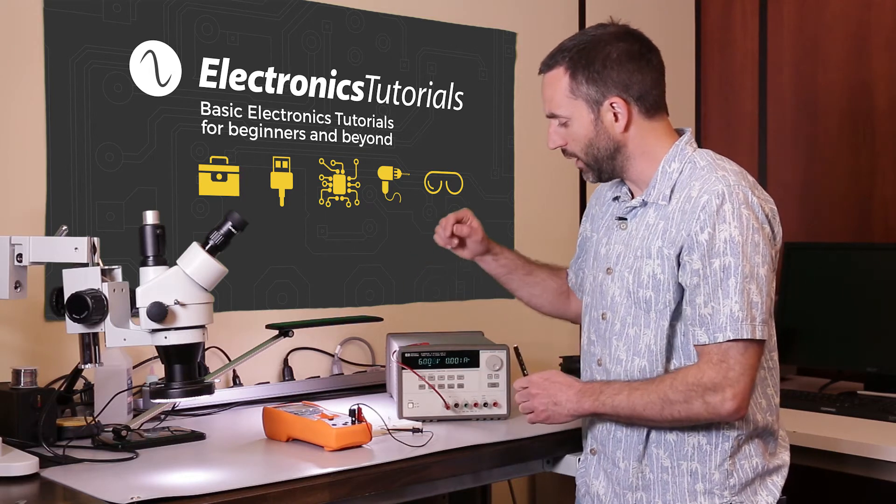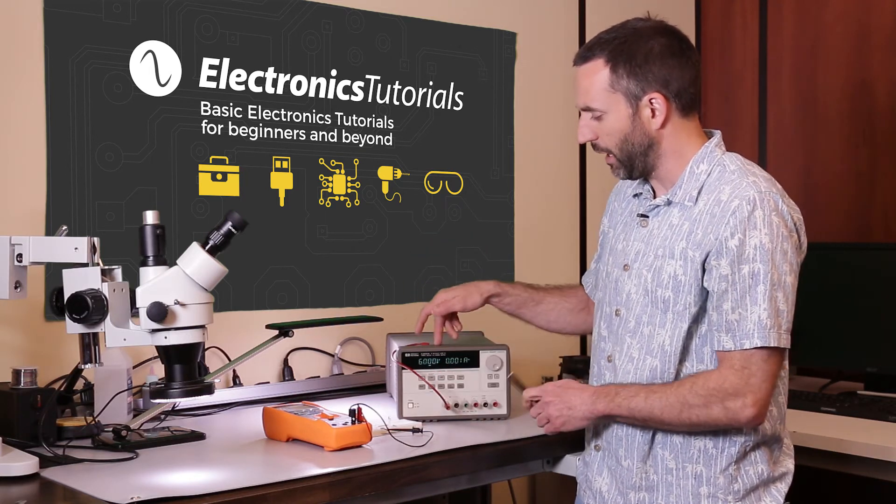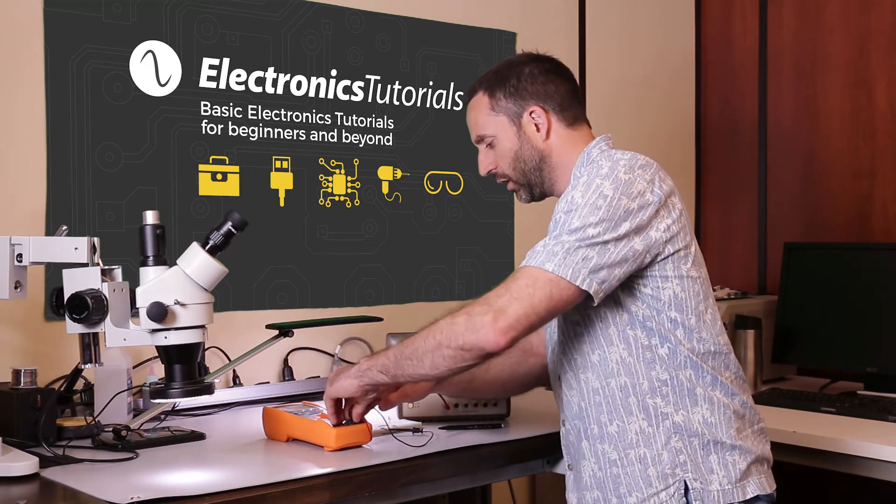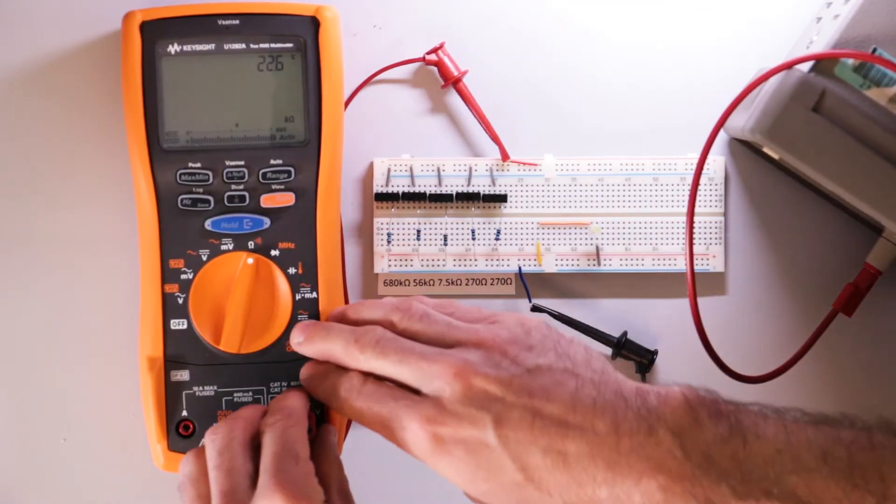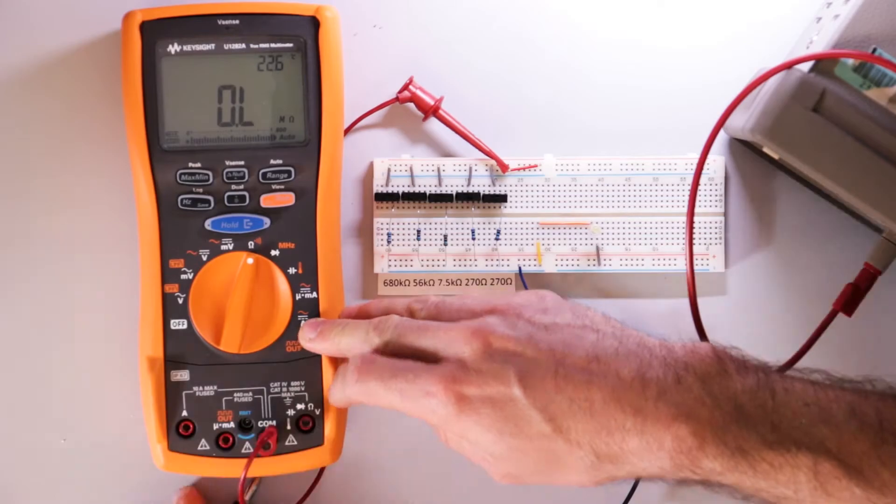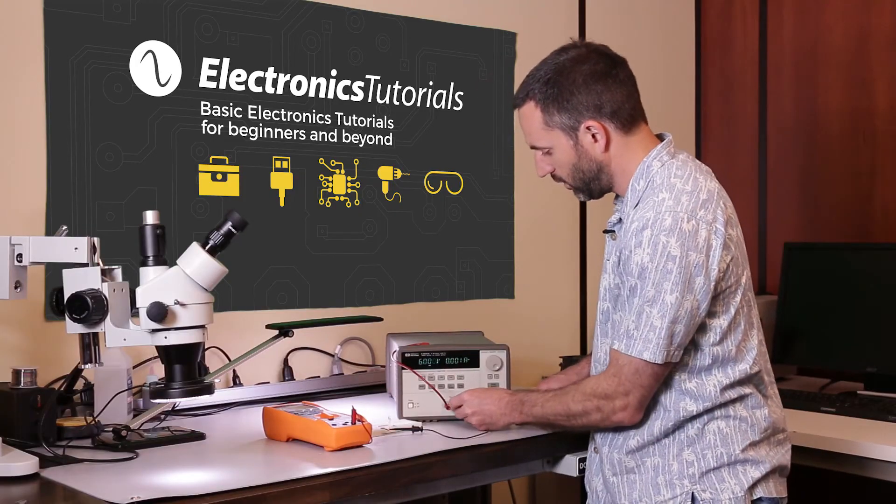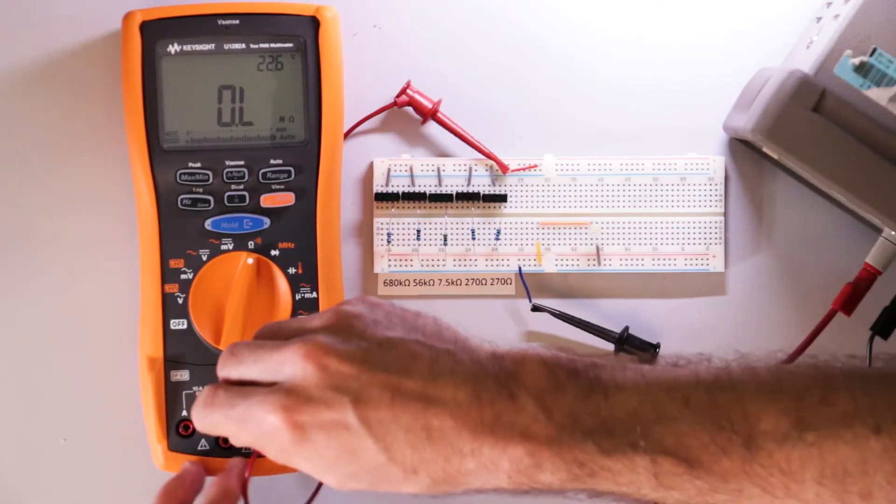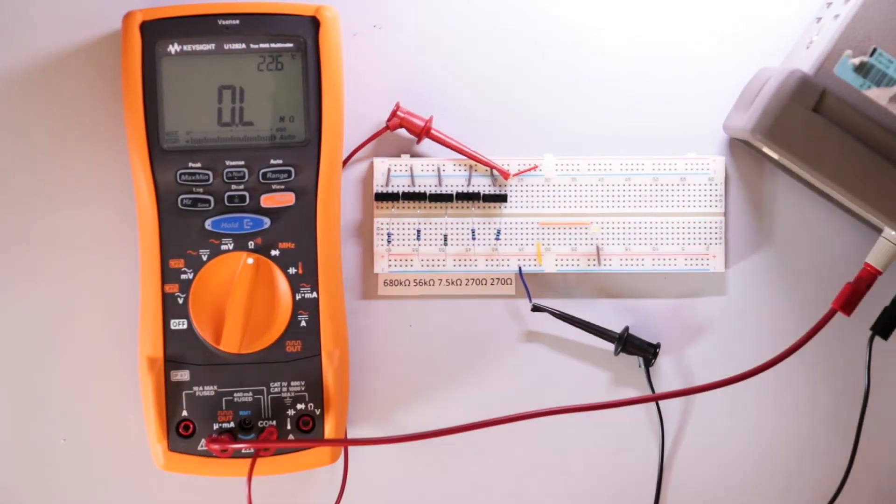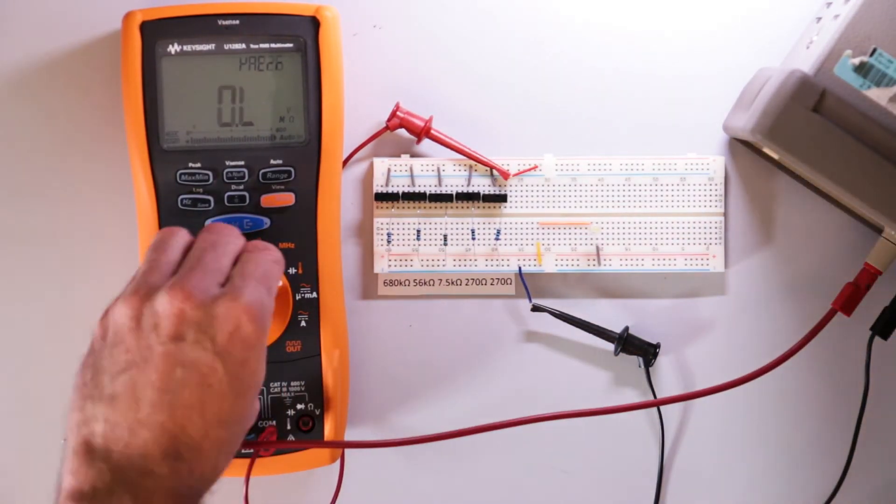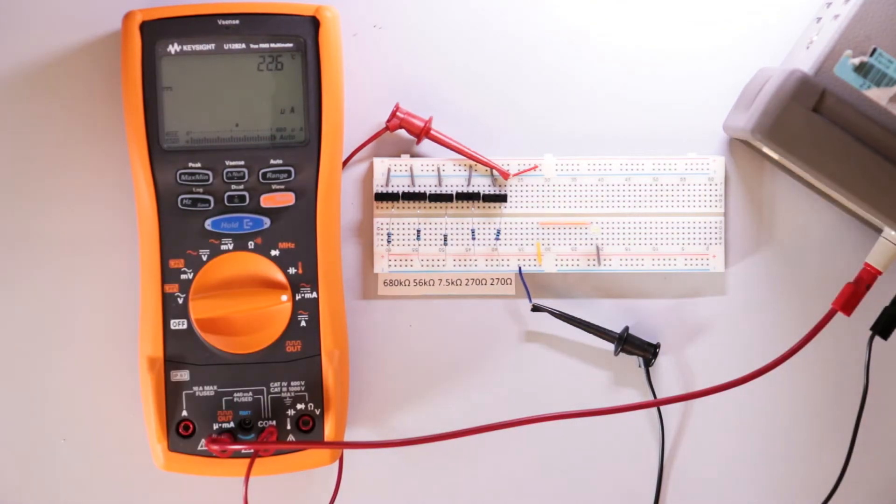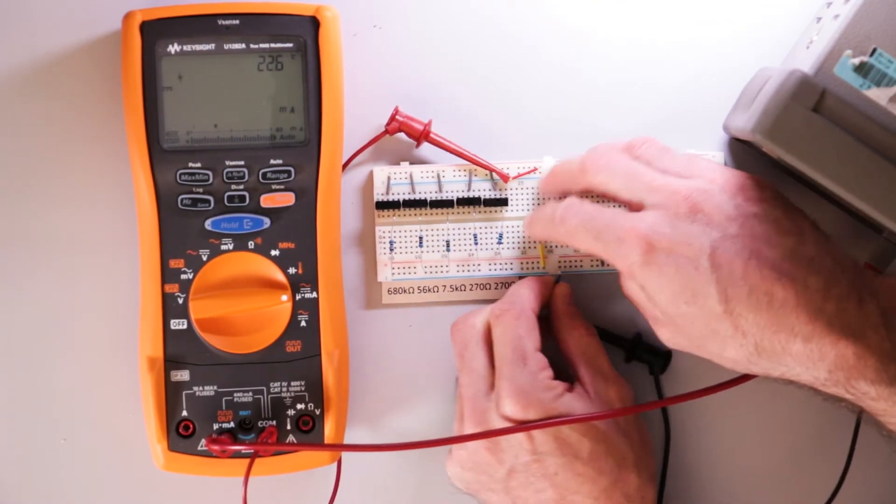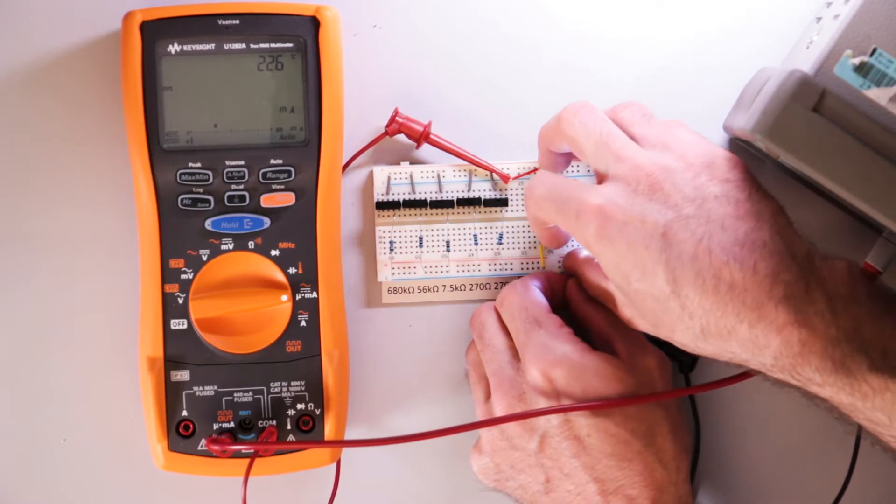I'm going to now power the LED with the power supply. So I'm going to disconnect this guy. And this comes over here. I'm using six volts on the power supply. And I'm going to move this wire over here to bring the LED into the circuit.